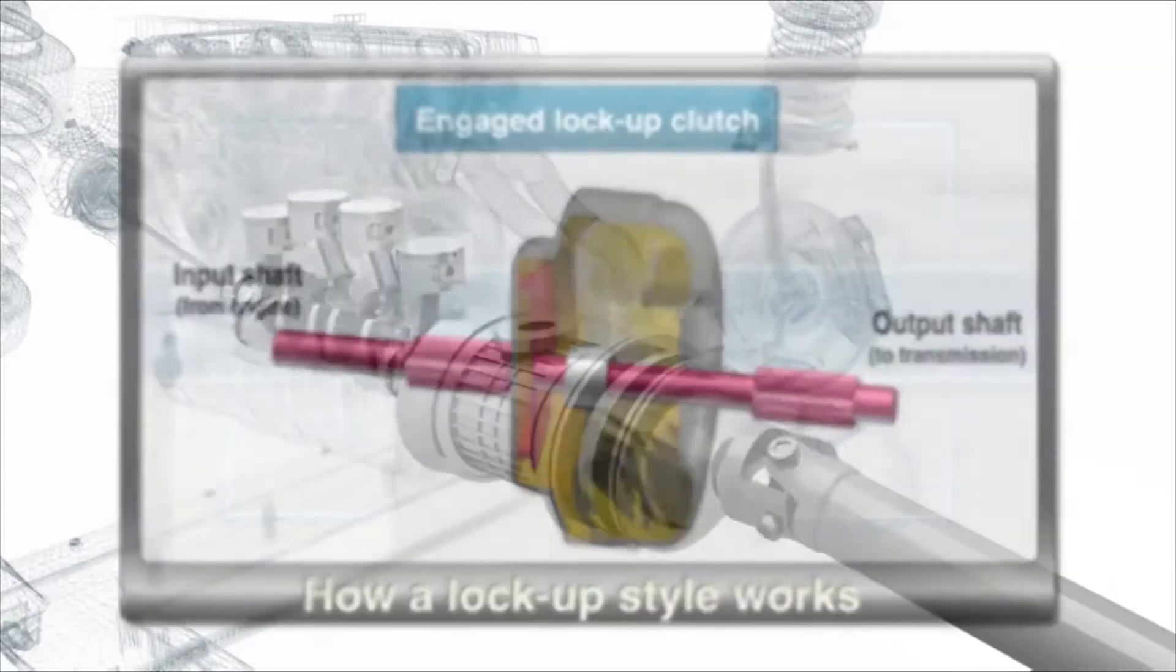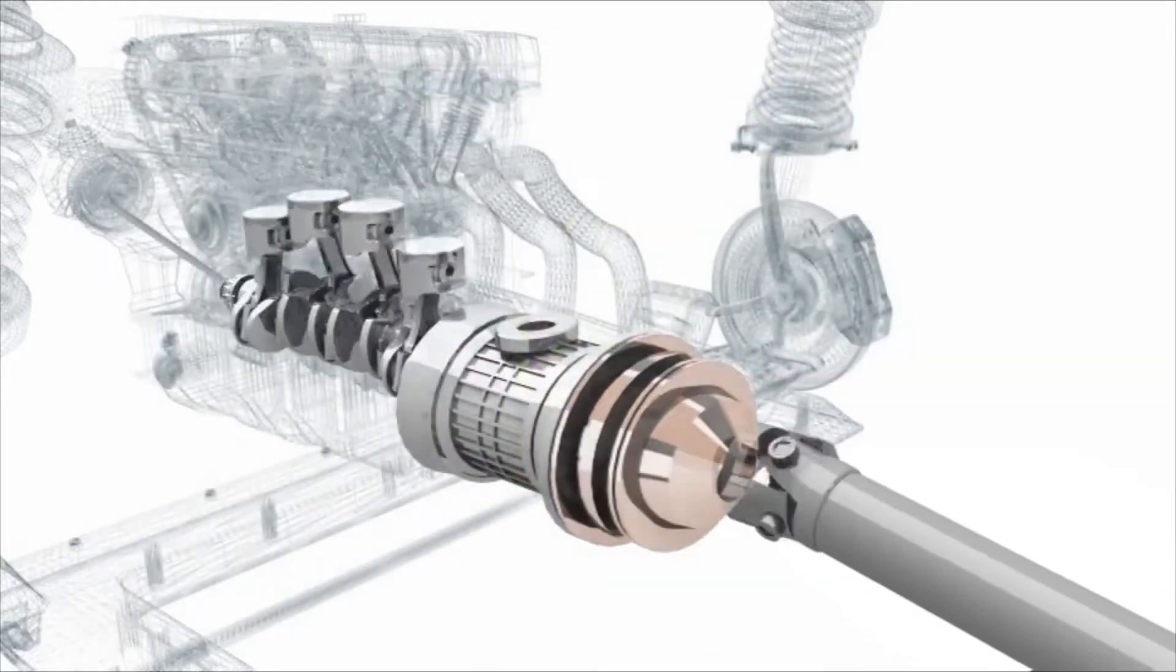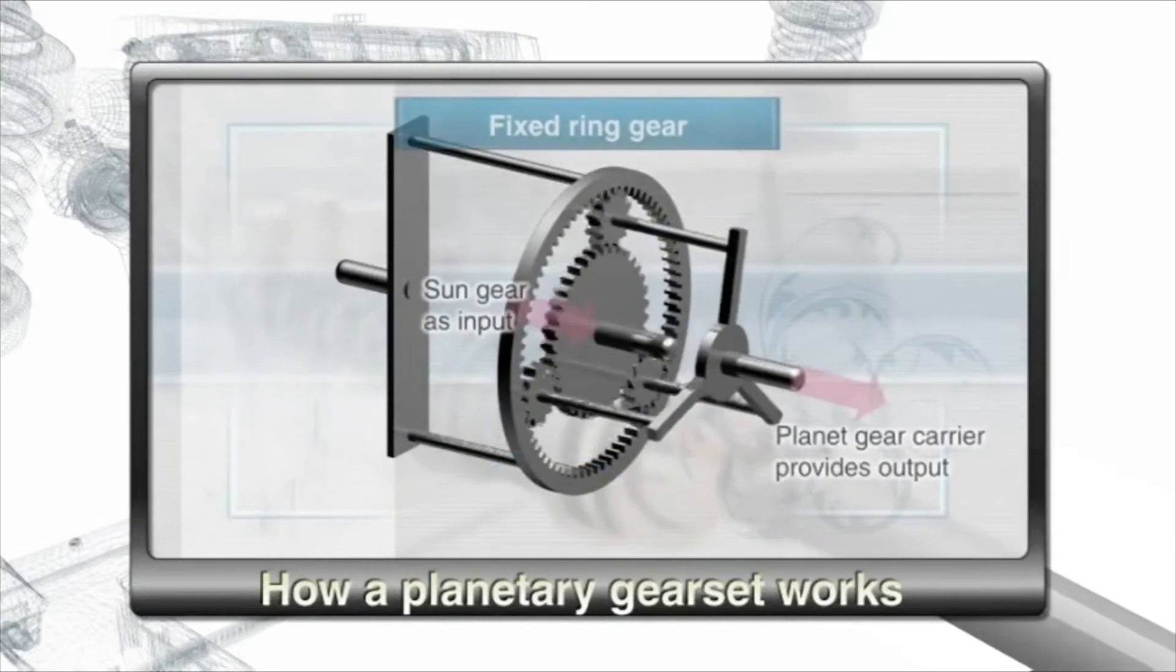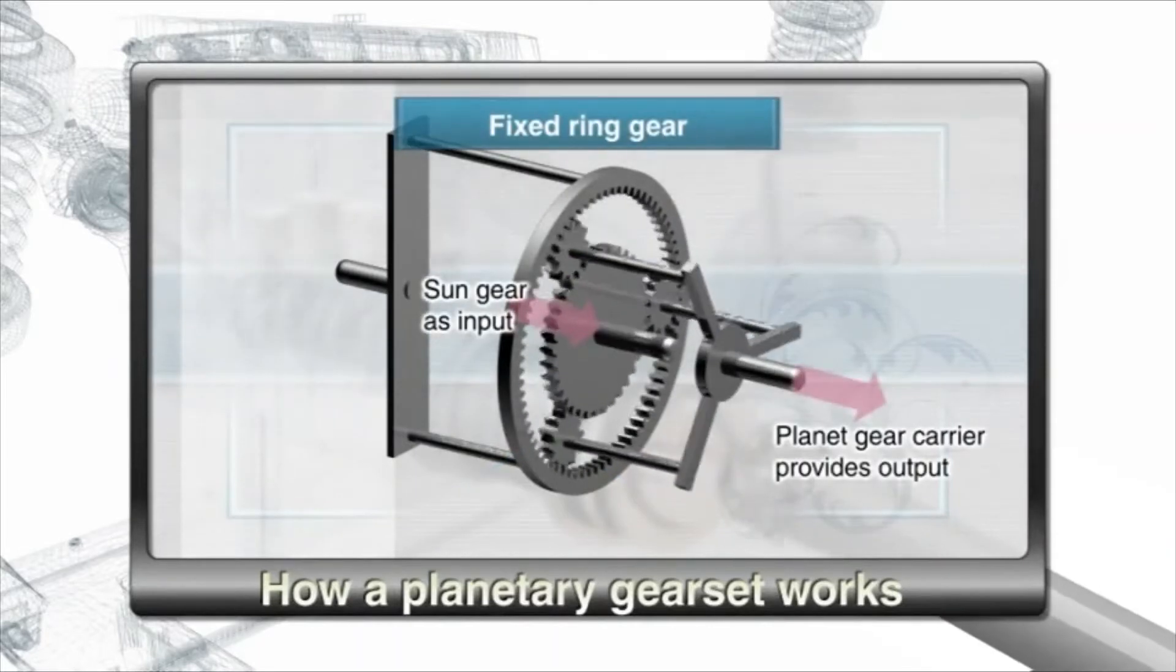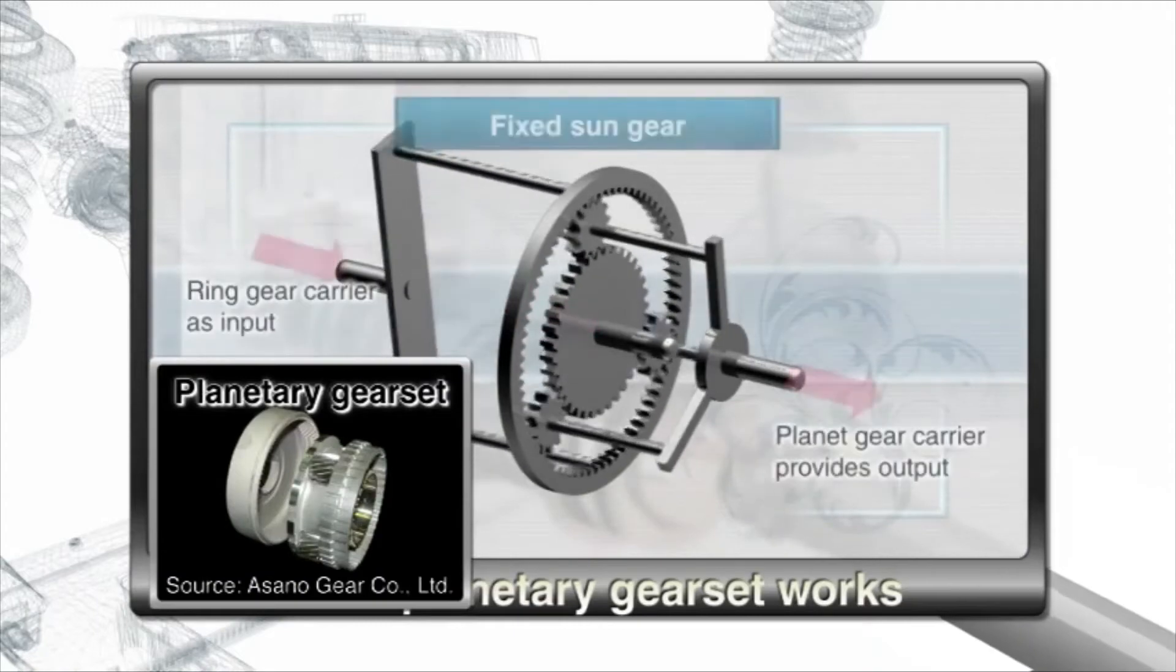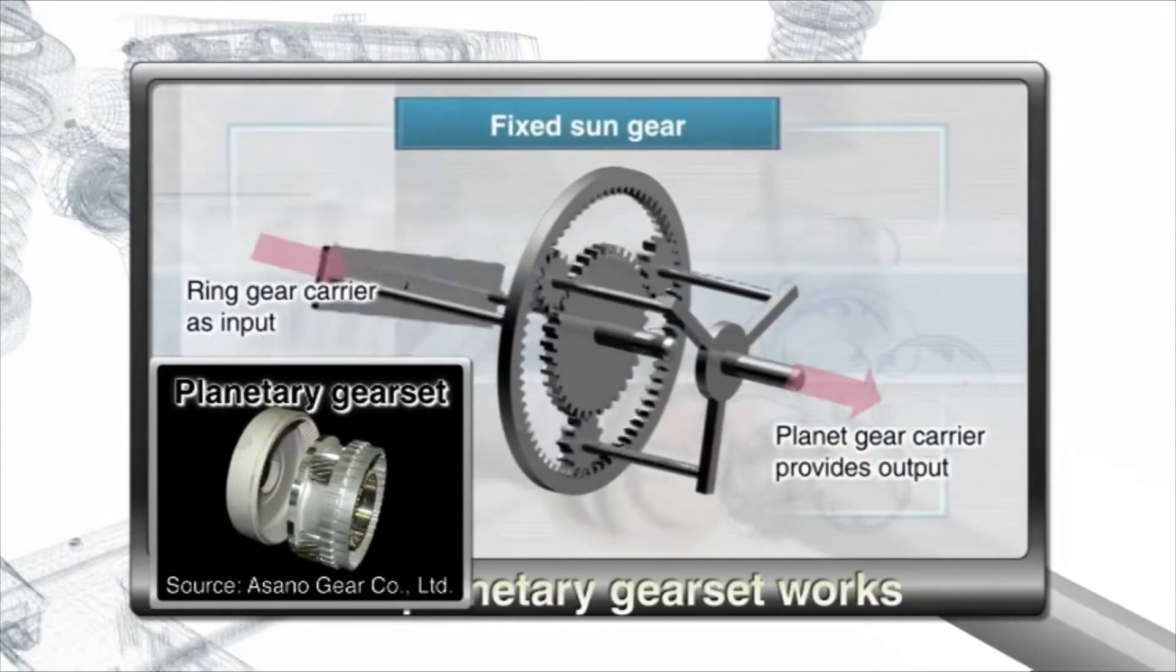The auxiliary transmission converts the power generated by the torque converter. A planetary gear set in the auxiliary transmission consists of a sun gear, planet gears and a ring gear. The brake and clutch systems shift the gear set to change the rotational speed and direction.